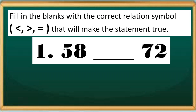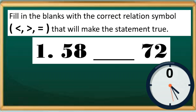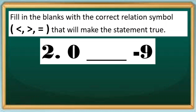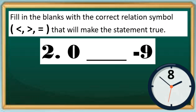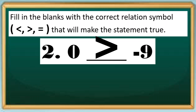Number 1: let's compare 58 and 72. Correct — our answer is less than. Number 2: 0 and negative 9. Correct — our answer is greater than.